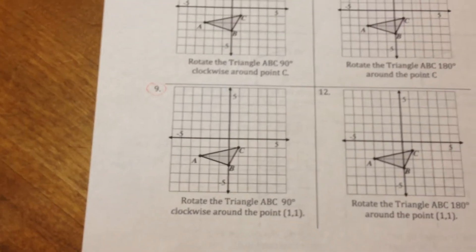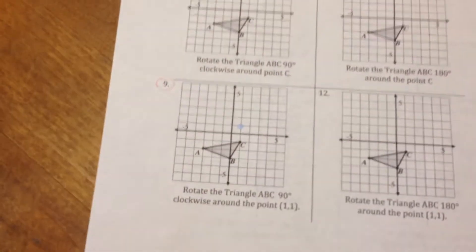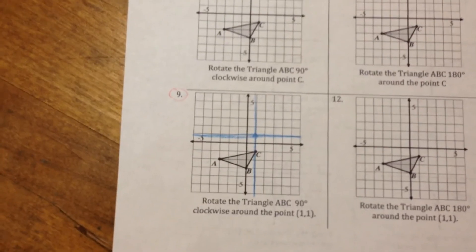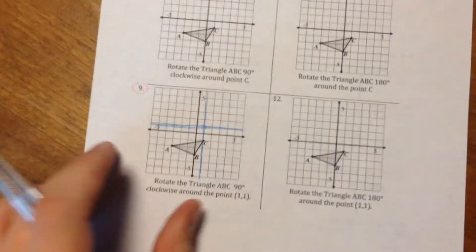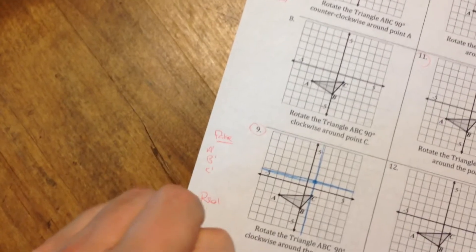Let's rotate triangle ABC 90 degrees clockwise around the point (1,1). So again, we're going to label point (1,1) with our color, draw a vertical line through that point, and a horizontal line through that point. Then we're going to rotate our paper 90 degrees clockwise. Let's also set up the fake and real points table: fake A prime, B prime, C prime; real A prime, B prime, C prime.